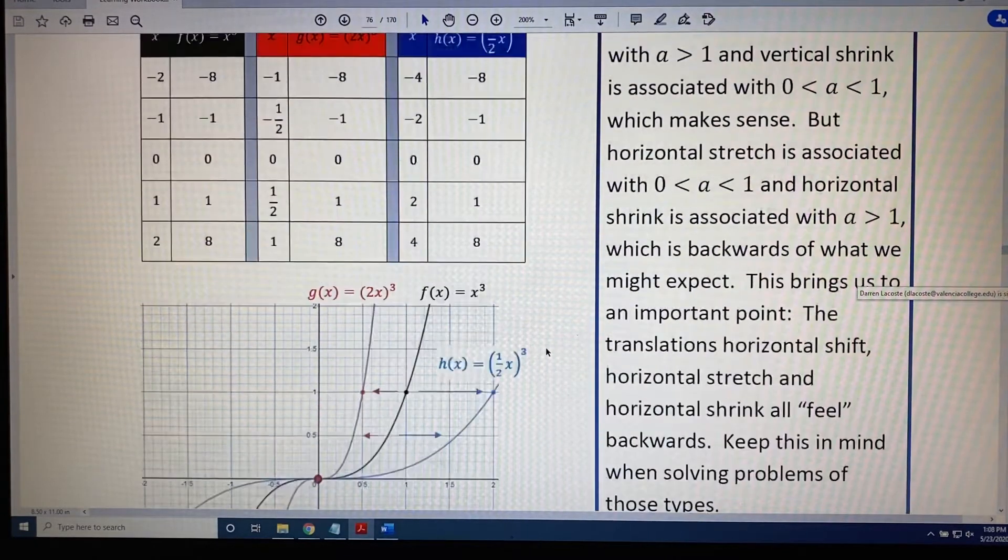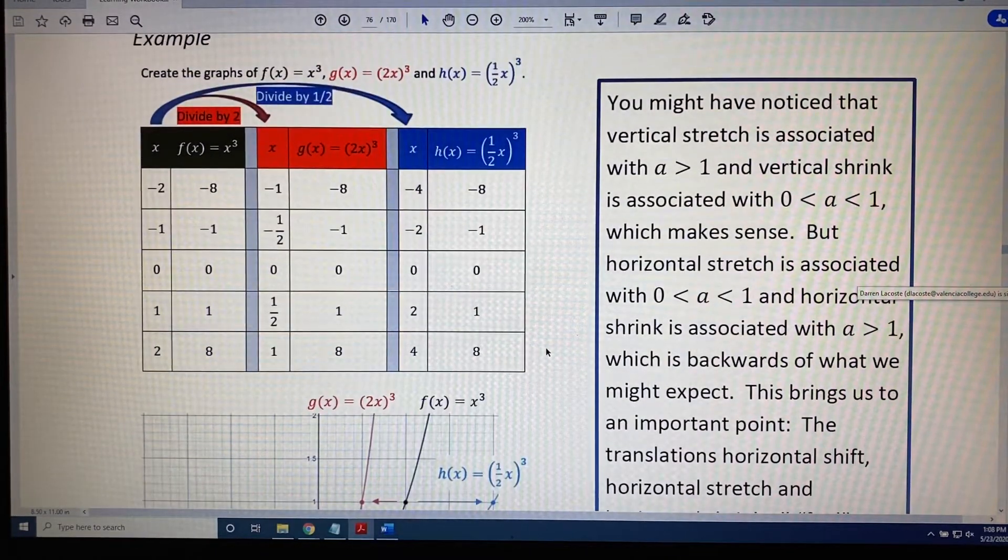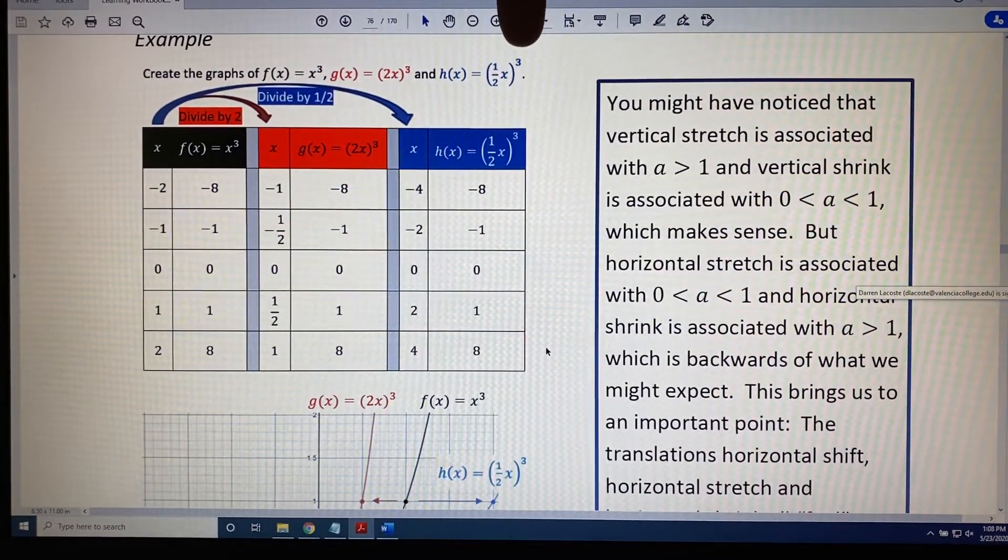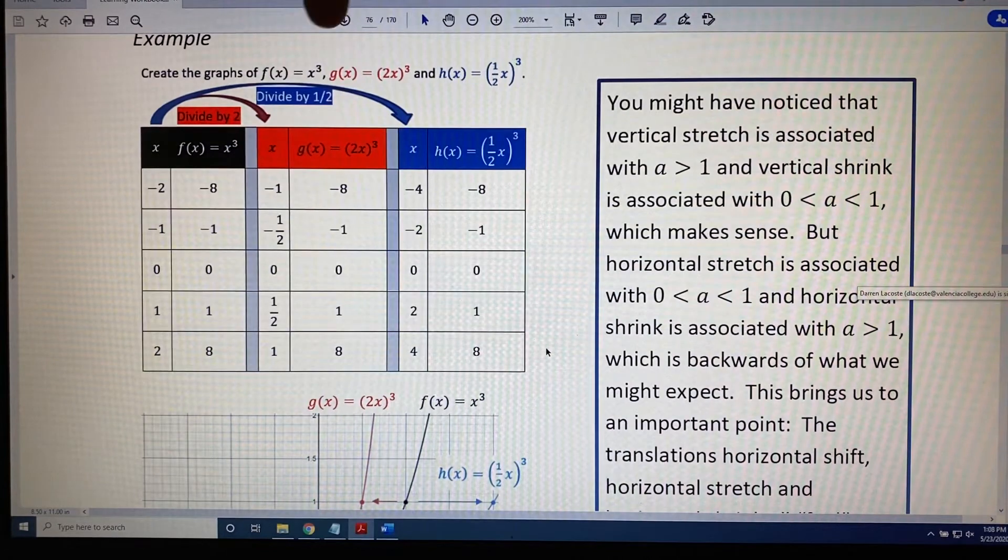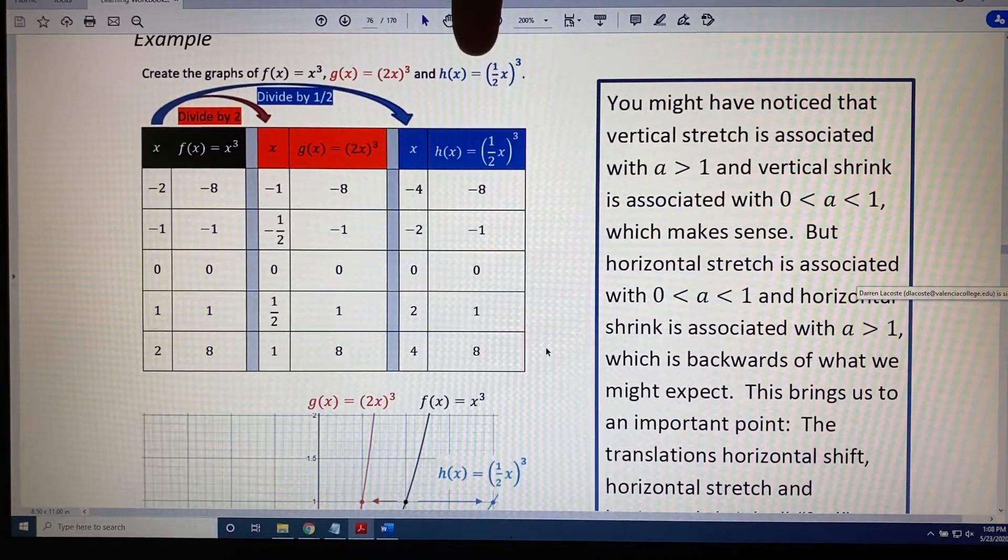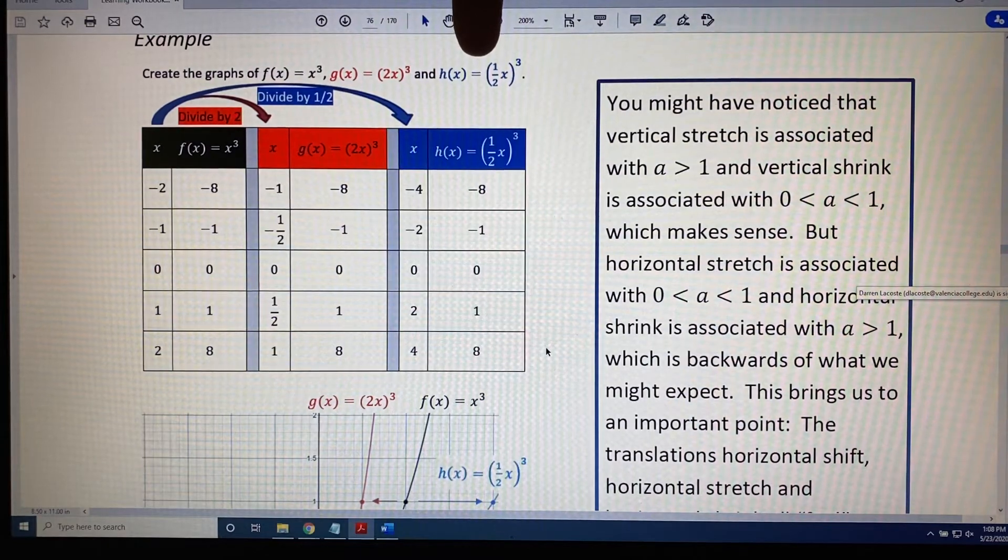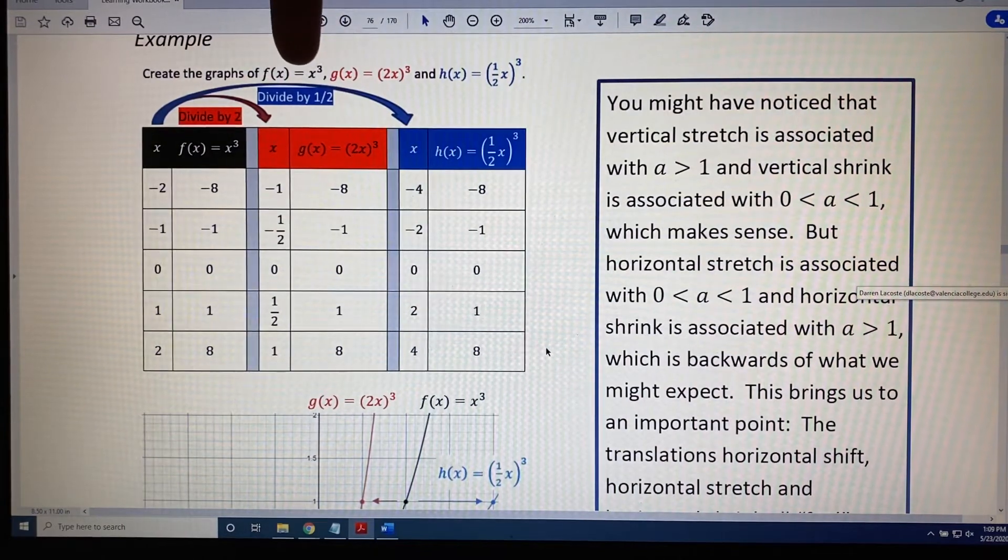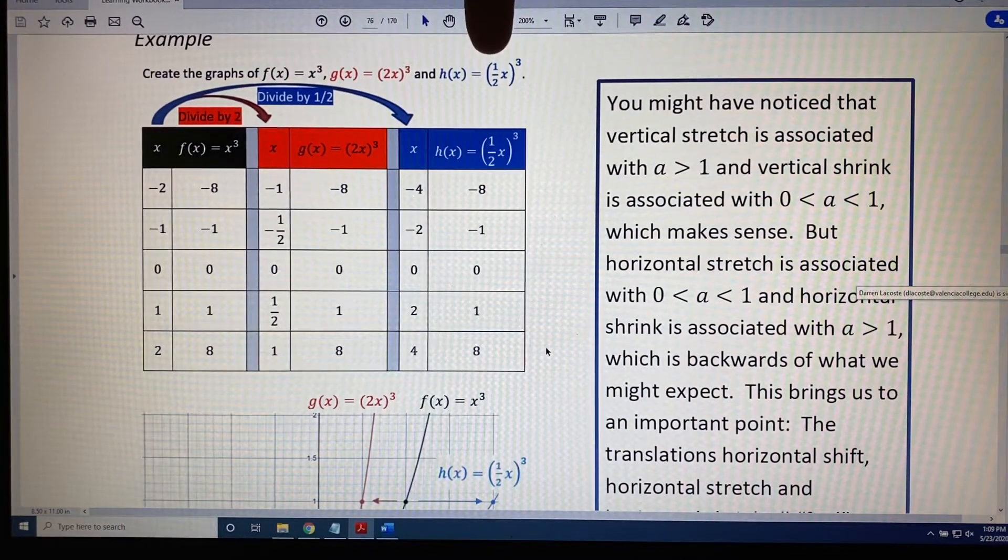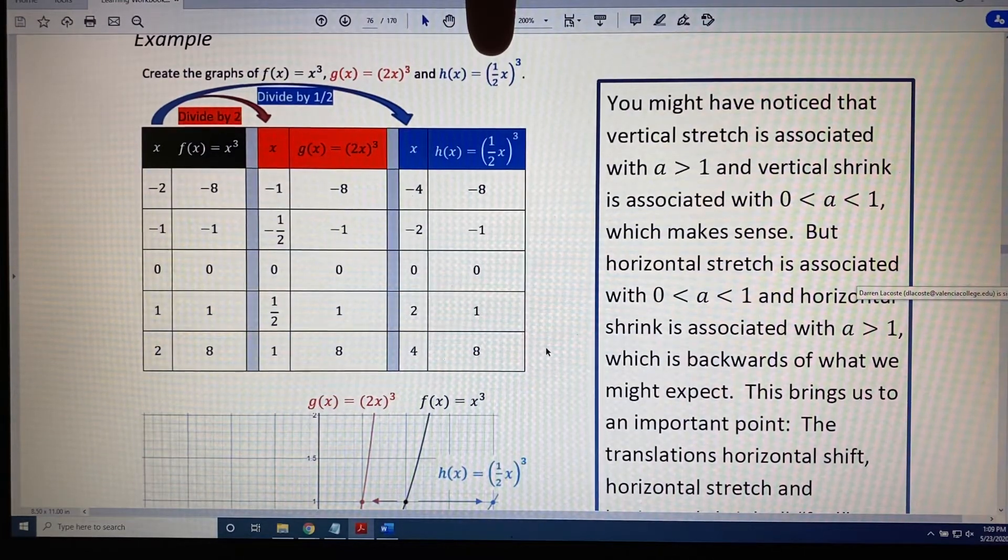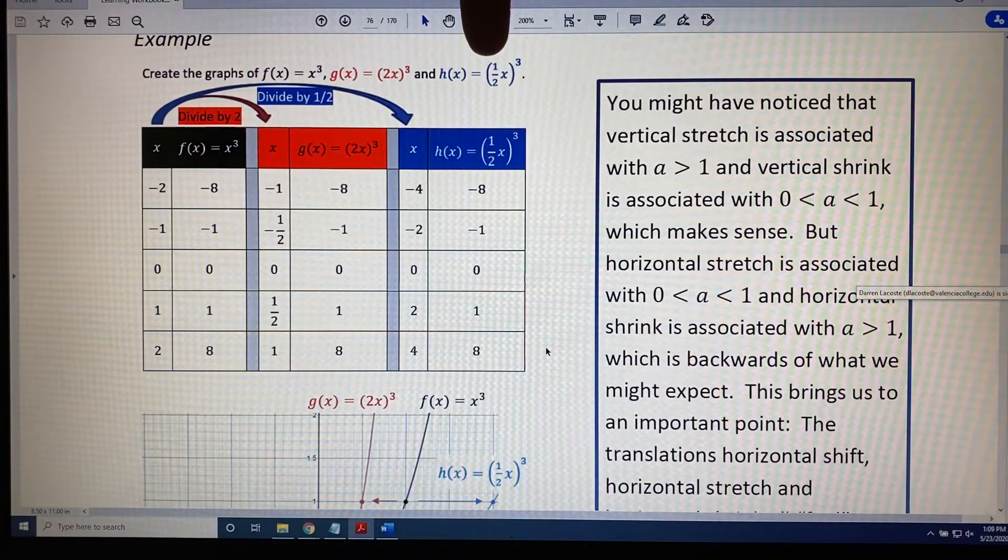That brings us to our third graph, h(x). h(x) = (½x)³. Once again, when we compare f(x) = x³ and h(x) = (½x)³, the difference is the ½ and the parentheses. So whenever you replace x with (ax), you're dealing with a horizontal stretch or shrink. The value of a for this problem is ½.